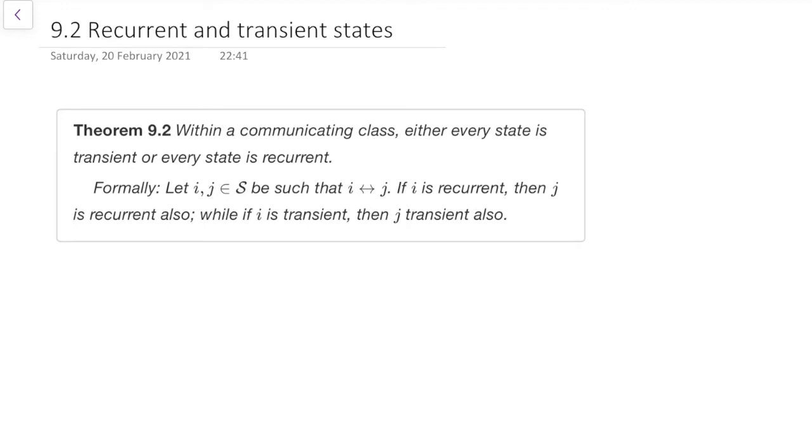Note that the second sentence there is just saying that same thing a bit more carefully. It says, if i communicates with j, which means that i and j are in the same communicating class, then if i is recurrent, then j is recurrent. Whilst if i is transient, then j is transient. That's the same way of saying that if you've got two states in the same class, they have the same transience or recurrence.